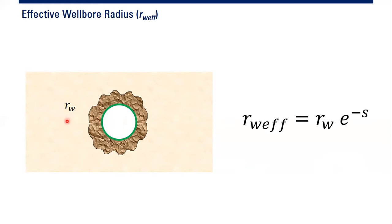The original or initial wellbore radius of this well is still rw, but regarding the productivity of this well — or the capacity of this well to enable fluid flow — we can see another wellbore radius which is different from the initial one. We call that new wellbore radius the effective or equivalent wellbore radius, rw_effective.